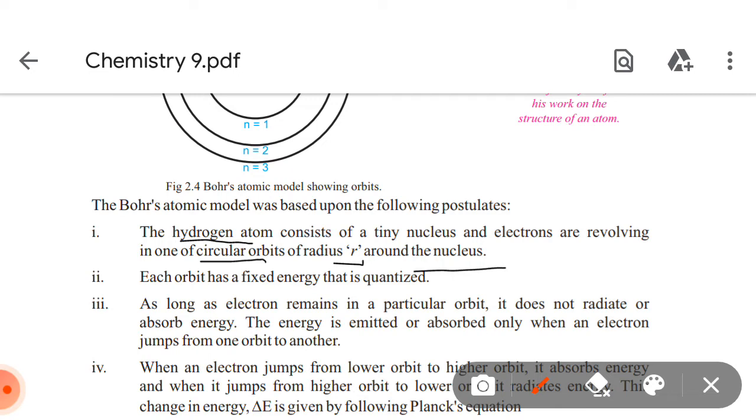Each orbit has a fixed energy that is quantized. As long as the electron remains in a particular orbit, it does not radiate or absorb energy. The energy is emitted or absorbed only when an electron jumps from one orbit to another.